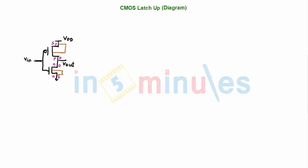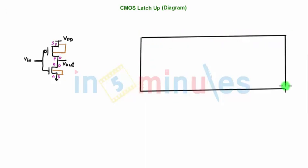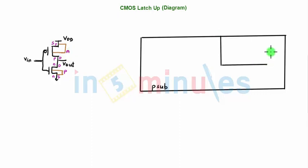Now I'll quickly go ahead and make the cross-sectional diagram of the CMOS inverter. This is nothing but my P-substrate. We know from fabrication processes that when the substrate is P-type, we can fabricate an NMOS on it, but we cannot fabricate a PMOS. In order to fabricate a PMOS, we'll need an N-type substrate — nothing but an N-well. So let's make an N-well here.